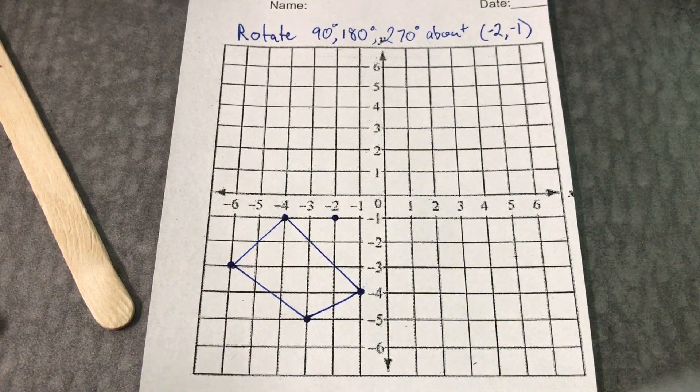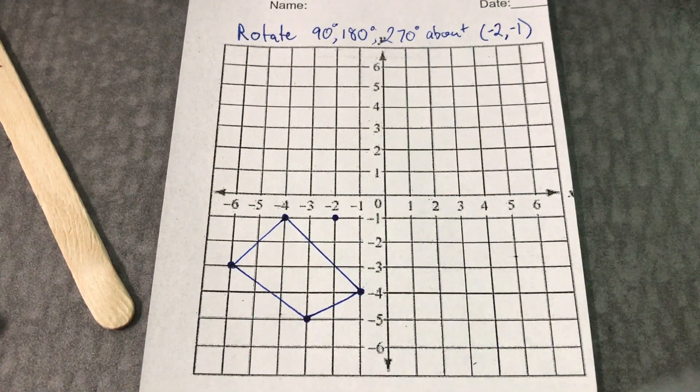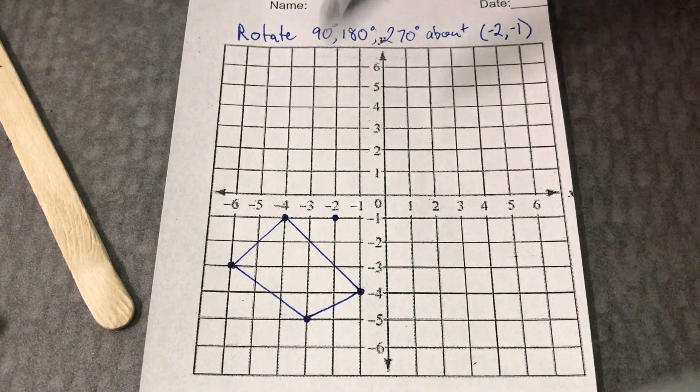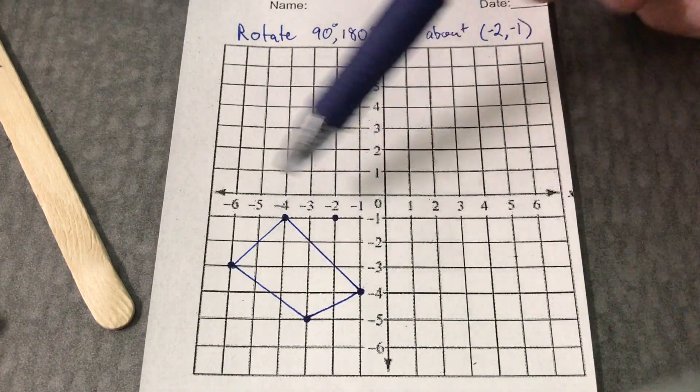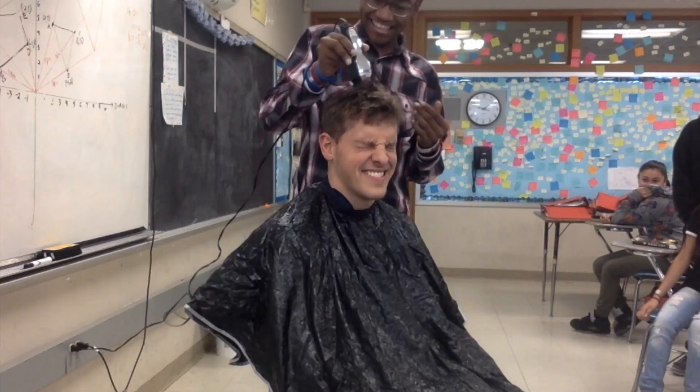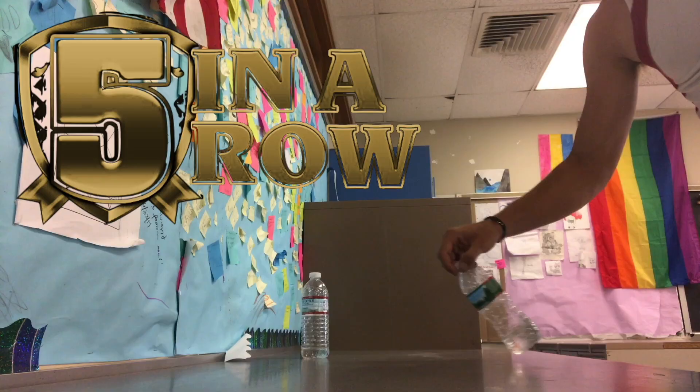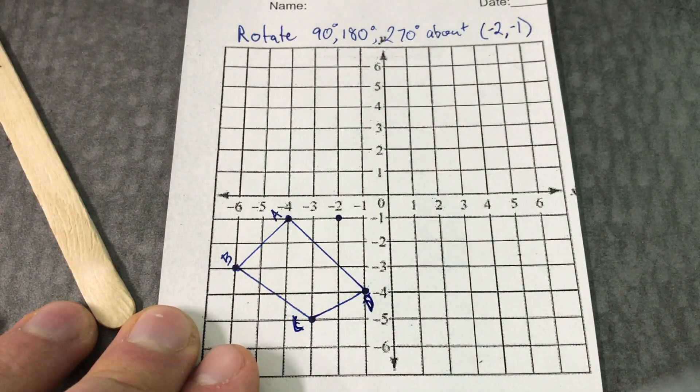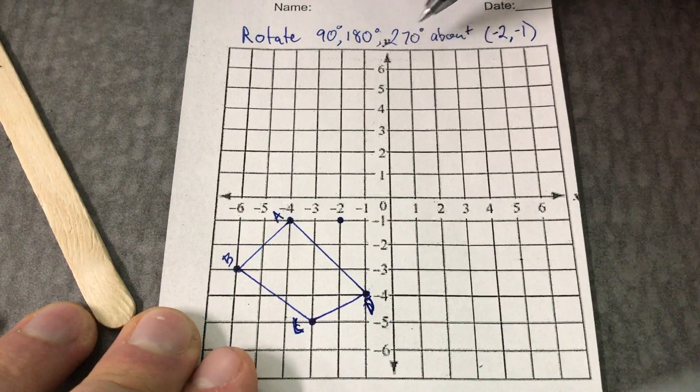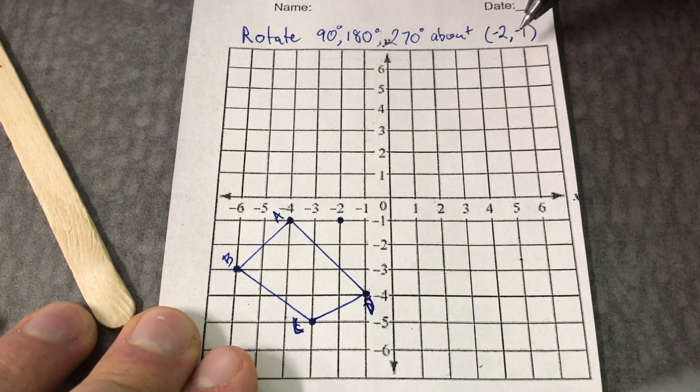Hello and welcome to my math students. I'm going to be practicing how to rotate a shape about a point other than the origin at negative two, negative one here. I've labeled my shape ABCD and I'm going to be rotating it 90, 180, and 270 degrees about point negative two, negative one.